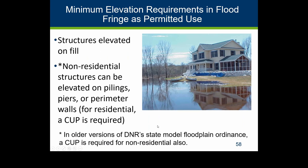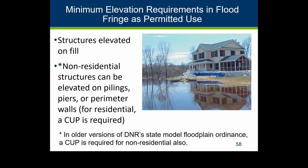In the flood fringe, buildings need to be elevated so the lowest floor is at the Regulatory Flood Protection Elevation. Here's an example of a building elevated on fill that stayed safe during a major flood. For non-residential structures, they can be elevated on pilings or a perimeter wall. In our older model ordinance that required a CUP, but our updated model ordinance since January 2022 clarifies that state law doesn't require a CUP for non-residential buildings using alternative elevation methods.